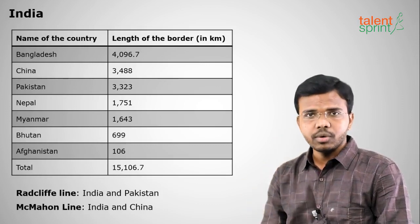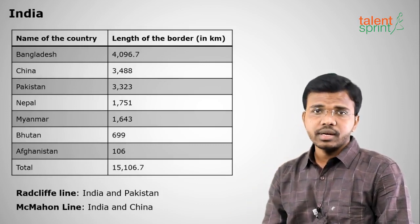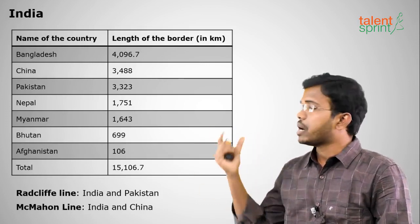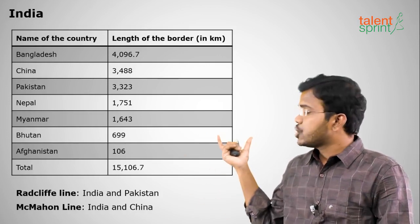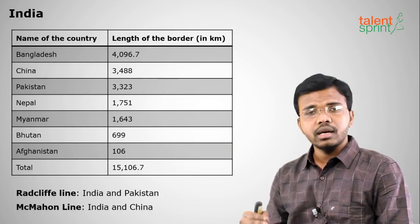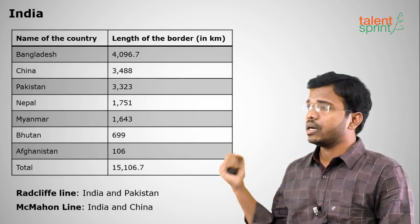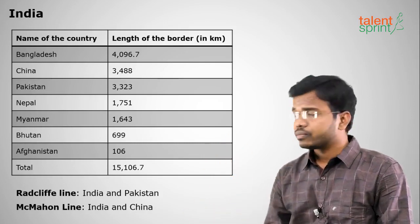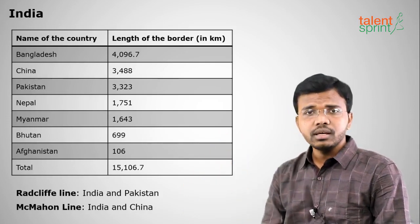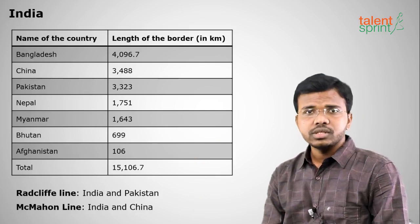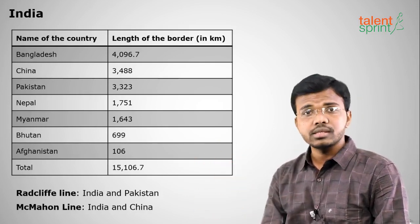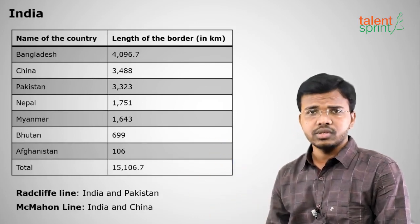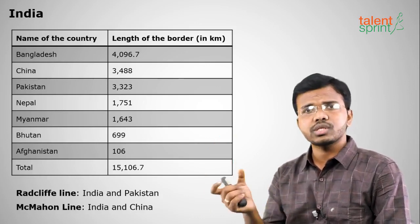India shares land boundaries with seven countries. In decreasing order of boundary length: Bangladesh is the longest at around 4,096 kilometers, followed by China, then Pakistan, then Nepal, then Myanmar, then Bhutan, and Afghanistan has the shortest land boundary with India.